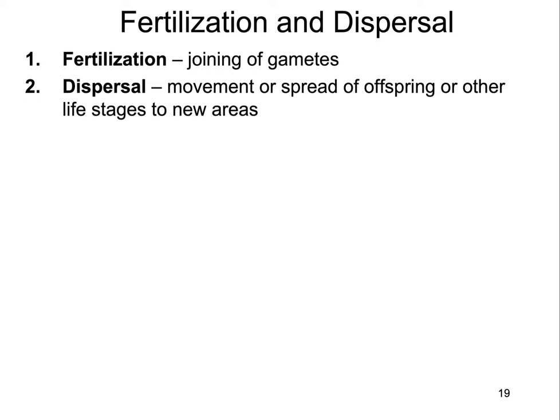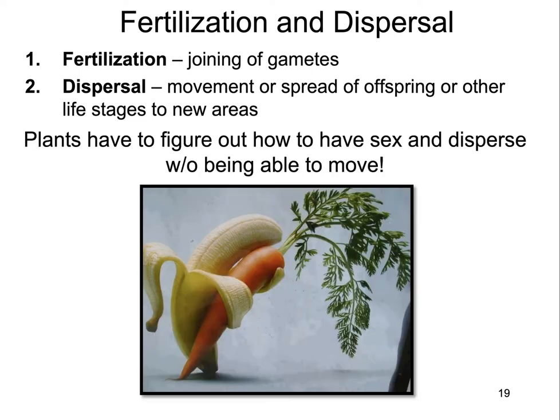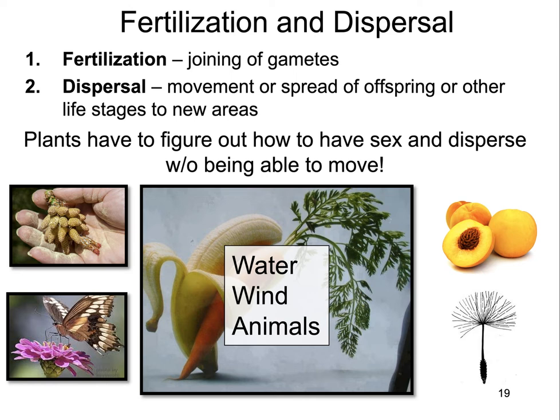When we talk about fertilization and dispersal, just as a reminder: fertilization is the joining of gametes like egg and sperm, and dispersal is the movement or spread of offspring or other life stages to new areas. The real challenge for plants is that they have to figure out how to do both of these things — join egg and sperm from two different individuals and move from place to place — without being able to move. The way they do that is basically by exploiting water, wind, and animals.